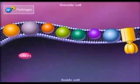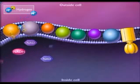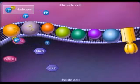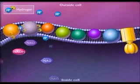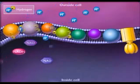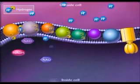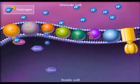Electrons enter the electron transport chain when NADH transfers its protons plus electrons to a membrane-embedded carrier protein. The electrons are sequentially carried along the electron transport chain while the protons are shuttled to the outside of the membrane.